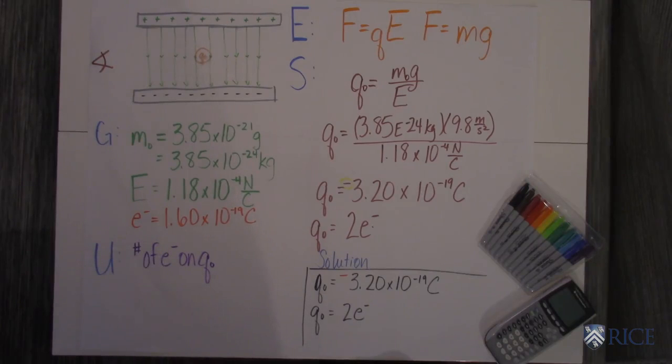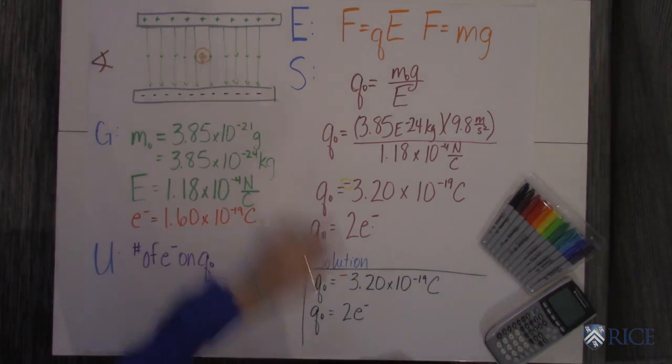You probably know the charge on the electron, but it's 1.60 times 10 to the negative 19th Coulombs. Of course, that's negative. And the question asks, how many electrons are on this charged particle?